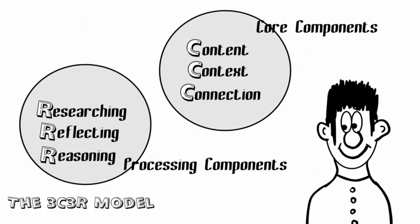Hung's model includes six components, which we'll refer to as the 3Cs and the 3Rs of the model. Hung calls the 3Cs the core components of the model, and they include content, context, and connection. The core components are primarily concerned with issues of appropriateness and sufficiency of content knowledge, content contextualization, and knowledge integration. Hung's model includes three other key elements, the R's, which are considered the processing components in the model and are designed to facilitate mindful and meaningful engagement in the PBL process. The R's in the model are researching, reflecting, and reasoning.